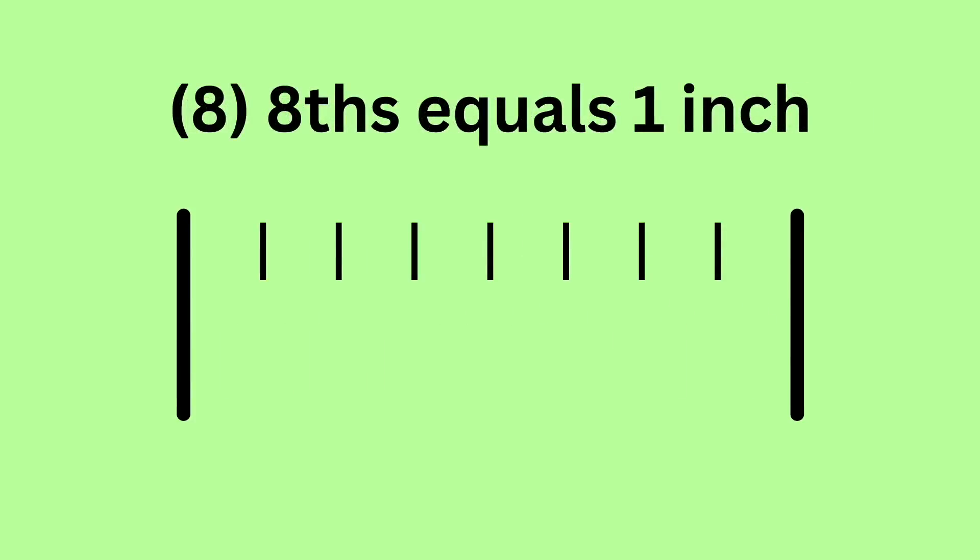There we go, I've removed every other 16th, and now you can see the eighths. And guess what? There are 8 equal parts. So an inch is made up of 16 sixteenths. Take away every other 16th, and then it is made up of 8 eighths.